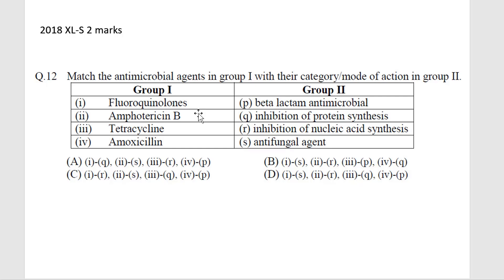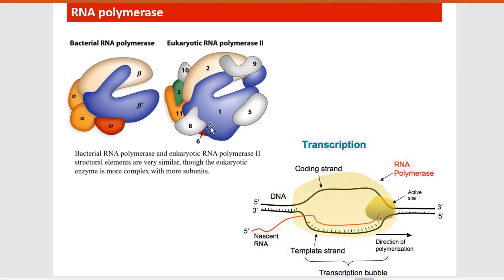This specificity means our own body tissues are less harmed when we consume antimicrobial agents. The difference that is exploited involves the bacterial RNA polymerase versus the eukaryotic RNA polymerase. The basic structure is the same, but the eukaryotic RNA polymerase is more complex and has more subunits. This is in the context of transcription in prokaryotes.